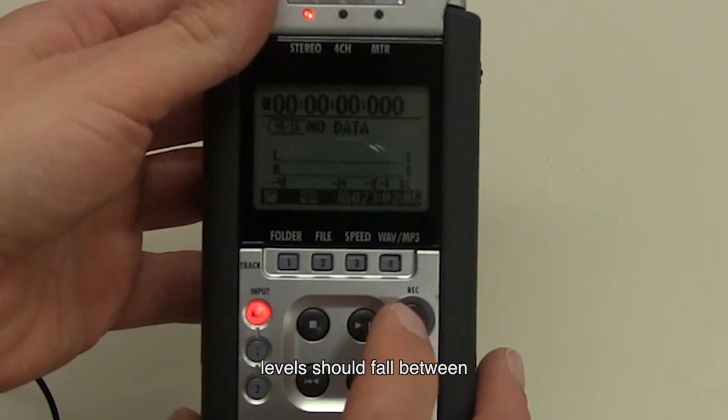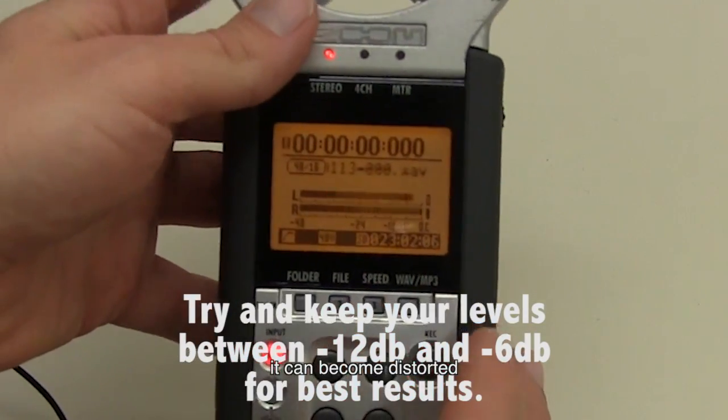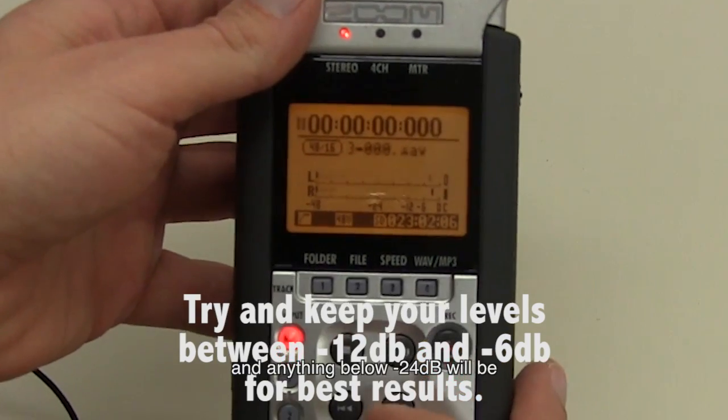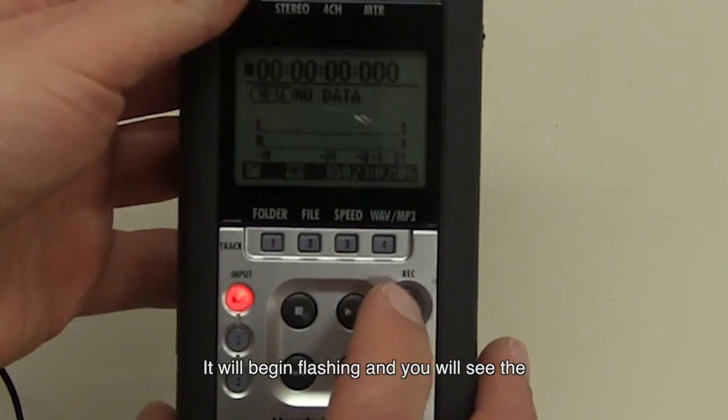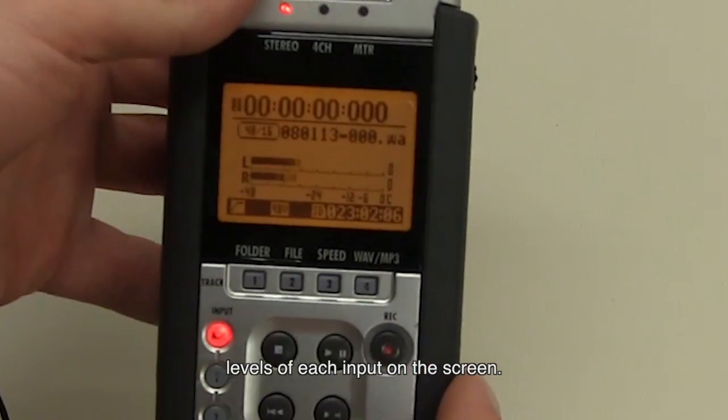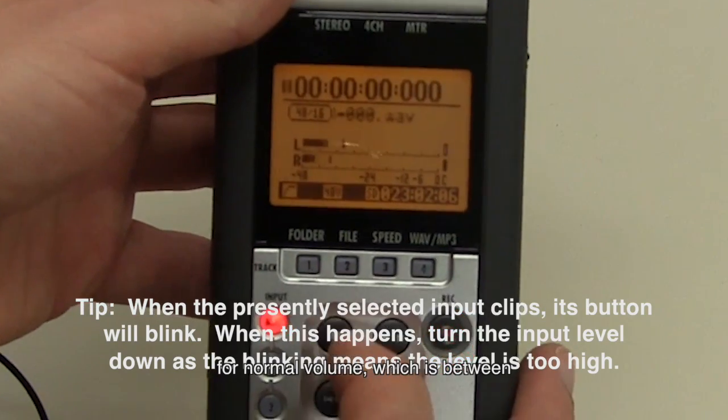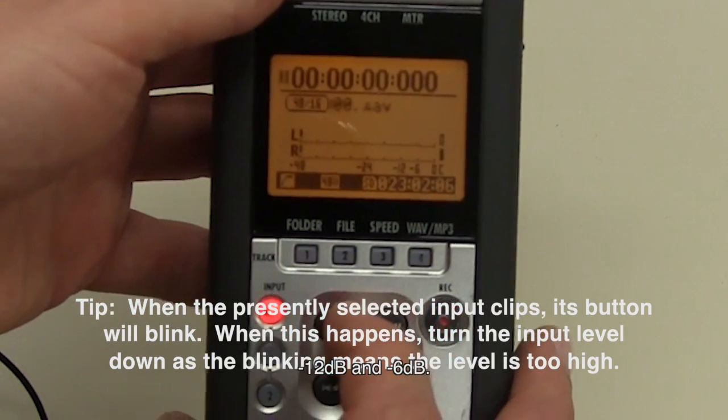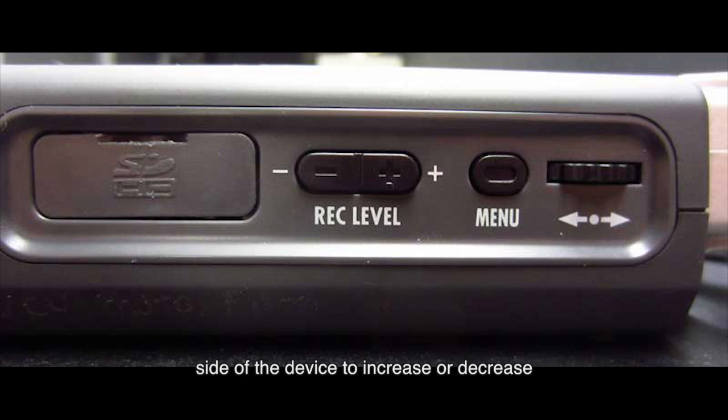Be sure to check the audio input level before recording. Good, audible levels should fall between negative 12 dB and negative 6 dB. If you pass negative 6, it can become distorted and anything below negative 24 will be too quiet. To check your levels, press the record button once. It will begin flashing and you will see the levels of each input on the screen. The bar for each input should go about three quarters of the way across the screen for normal volume, which is between negative 12 and negative 6 dB. You can adjust the levels of an input by selecting the input with the front buttons and then using the record level toggle on the right side of the device to increase or decrease the volume.